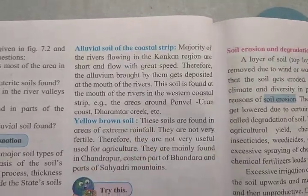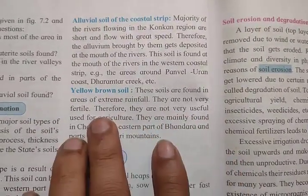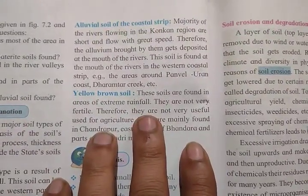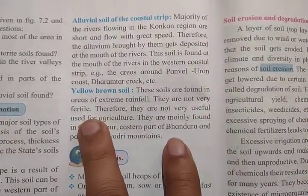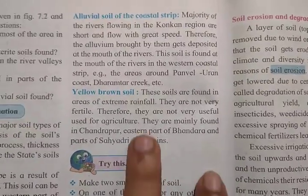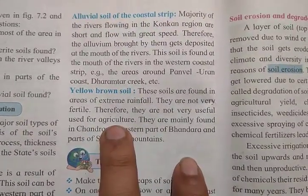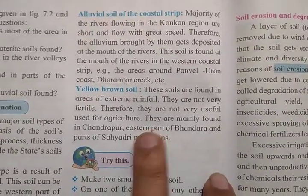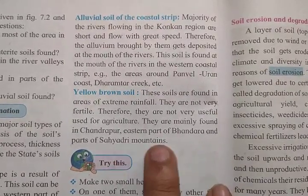The other soil type is yellow-brown soil. These soils are found in areas of extreme rainfall. The soil is not very fertile and therefore not very useful for agriculture. They are mainly found in Chandrapur, the eastern part of Bhandara, and part of the Sahyadri Mountain.